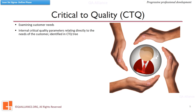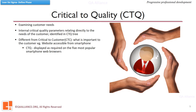We should differentiate critical to quality from critical to customer. Critical to customer represents what is important to the customer, while critical to quality represents a characteristic required to address customer expectations. For example, for a customer it is important that he can access a website on his phone — so the critical to customer characteristic is that the website is accessible from a smartphone. But the critical to quality characteristic would be that the website is displayed correctly on the most popular phone web browsers.